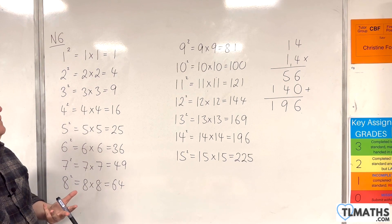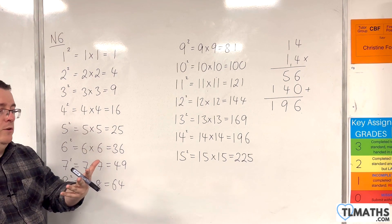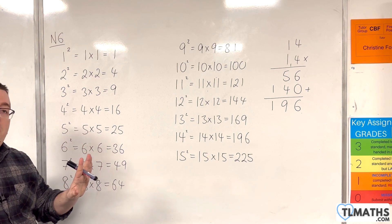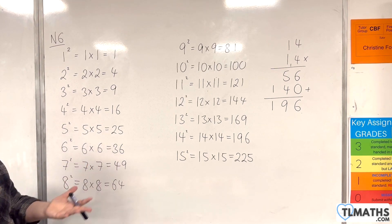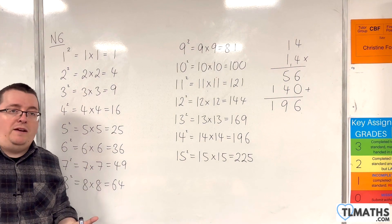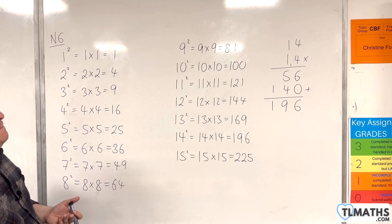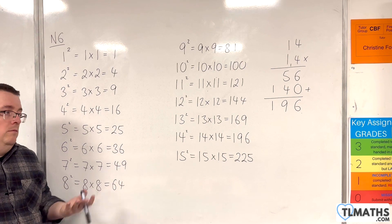Revision cards would be very good for this. So you just have 12 squared on one side, and 144 on the other side. And you can take that wherever you go and just practice at any opportunity you want to.